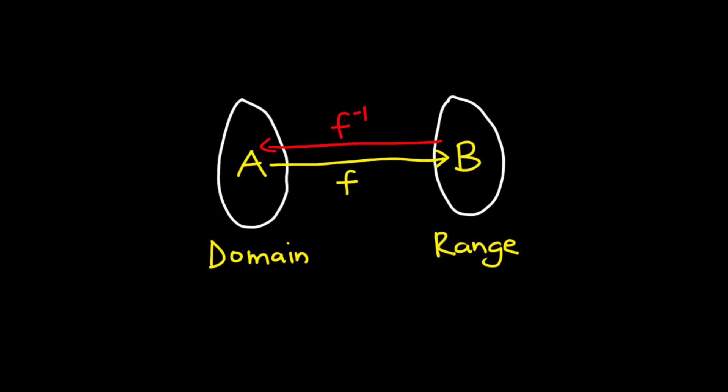We learned earlier that a function f is one-to-one if an element in the domain maps to or corresponds to a distinct value in the range. The inverse of the function f is then the function that maps the distinct value in the range back to the value in the domain. So for instance, the function f maps a, which is in the domain, to a distinct value b in the range. The function that maps b back to a is called the inverse function, and it is written as f exponent negative one.